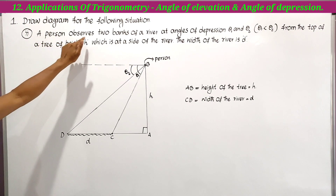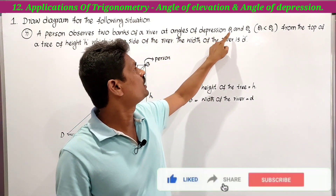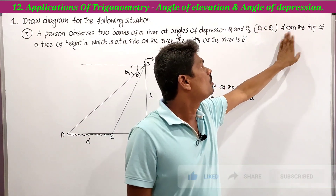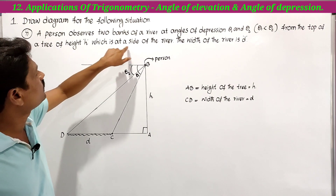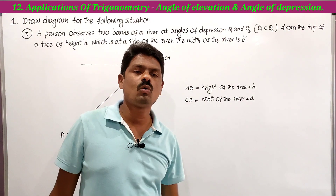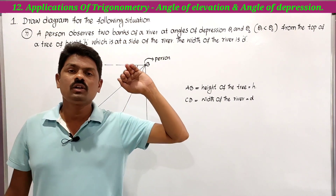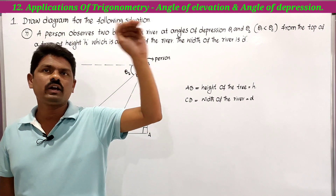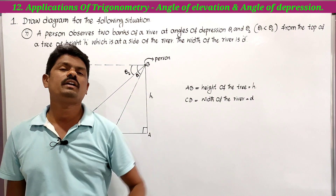Second situation: A person observes two banks of a river at angles of depression theta 1 and theta 2, where theta 1 is less than theta 2, from the top of a tree of height h which is at the side of the river. The width of the river is small d. So one person on a tree observes two banks of the river at angles of depression theta 1 and theta 2.